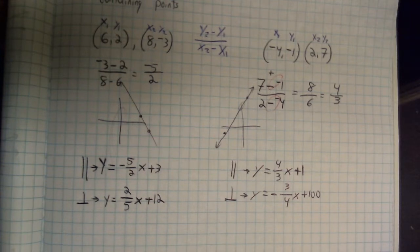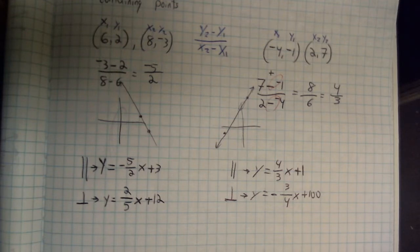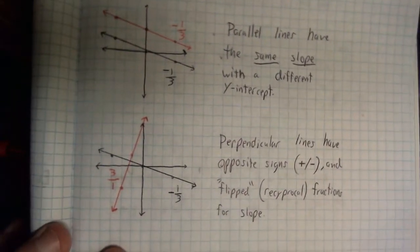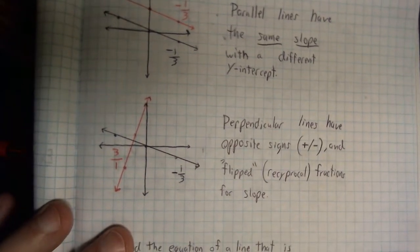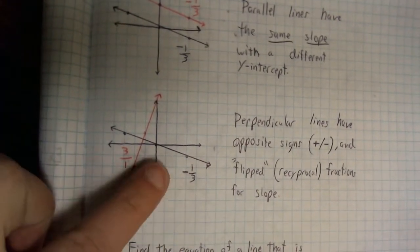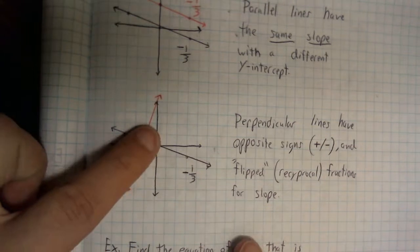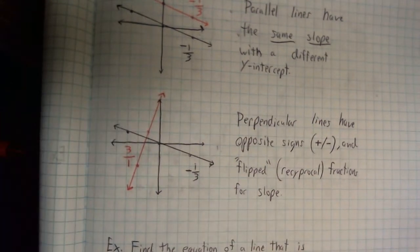That's it for parallel and perpendicular lines. Hope this helped you out. Remember, keep those few key facts in mind: we want parallel lines to have the same slope so they never cross, but we want to choose a different y-intercept so they're not the same line. And for perpendicular, we want one positive and one negative slope, and we want to make sure they have reciprocal fractions.